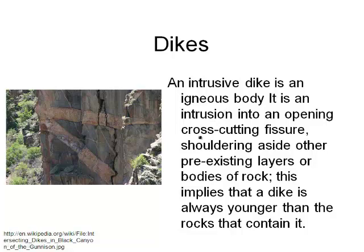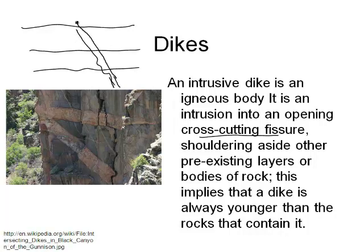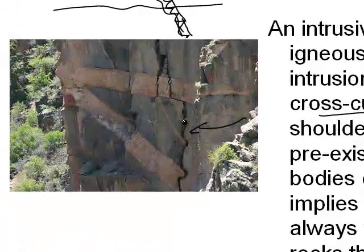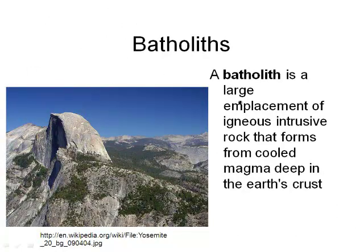The last vocabulary word here is a dike. A dike is an igneous body that is an intrusion into an opening, cross-cutting fissure. Basically, you have layers of rock laid down, and then later some magma flows from the bottom and flows through the existing rock — and that's the dike. This stuff is younger because it came in after the fact. This example is near Black Canyon near Gunnison, Colorado, and we can see the dikes right here. Sometimes it comes from the bottom, and sometimes from other directions.